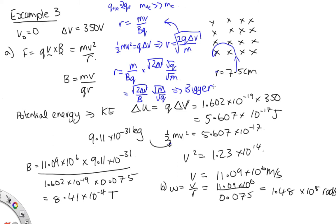Part D: what is an industrial application? Mass spectrometers use this to distinguish between different isotopes of the same element. In that case, they all have the same charge but a different mass. As the mass changes, the radius changes — so if you only want one isotope, this is a way to separate them.